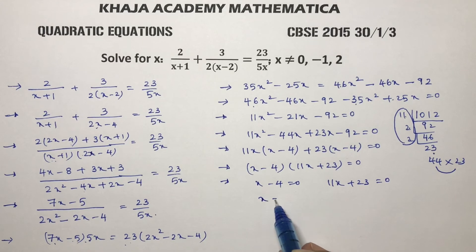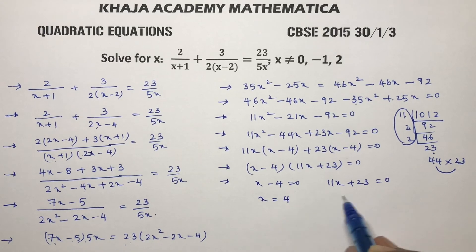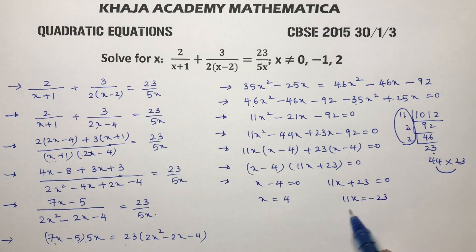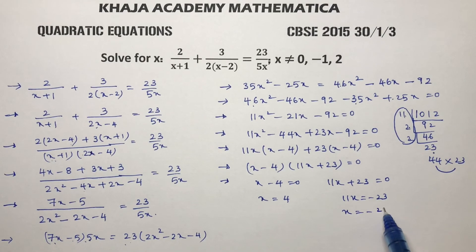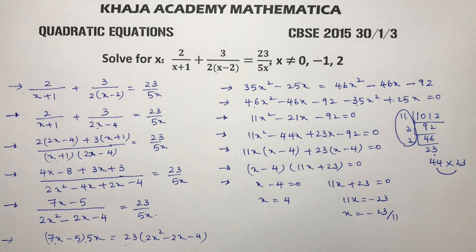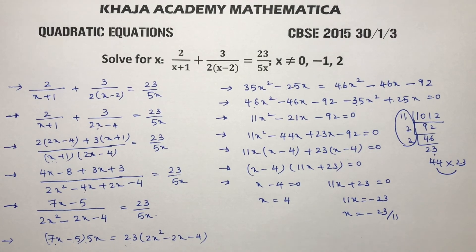So x equals 4, or 11x equals minus 23, which gives x equals minus 23/11. Therefore, x equals 4 or x equals minus 23/11.